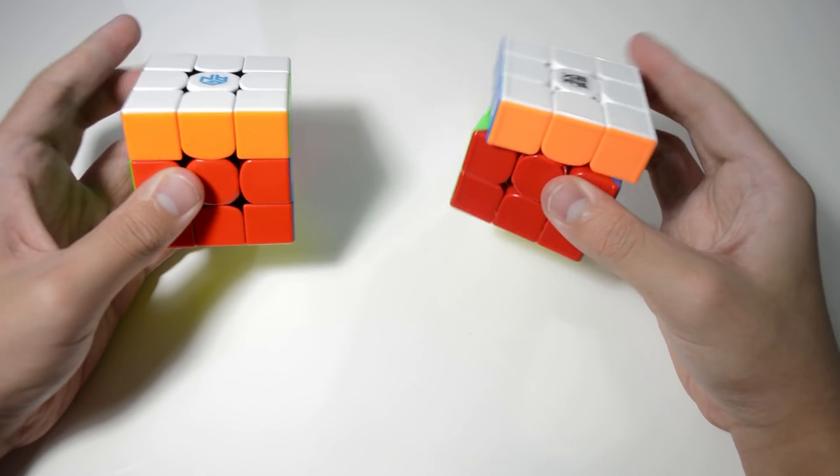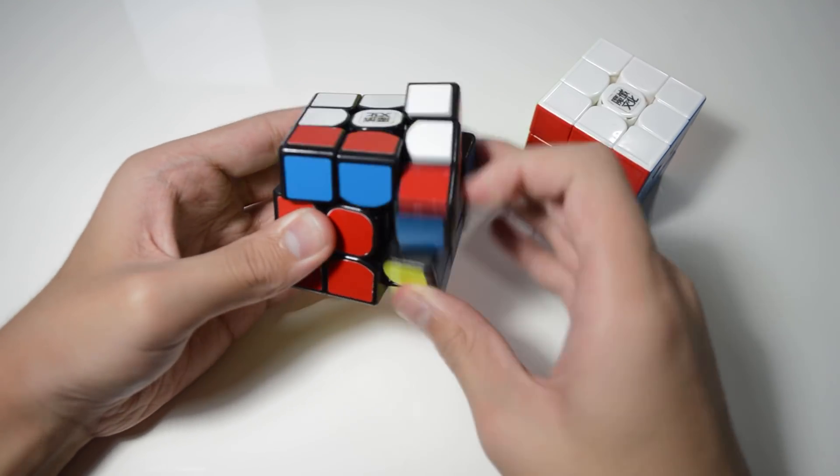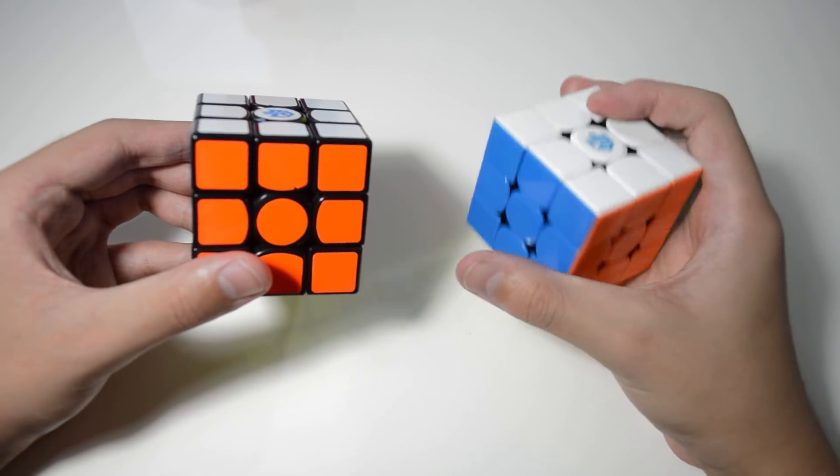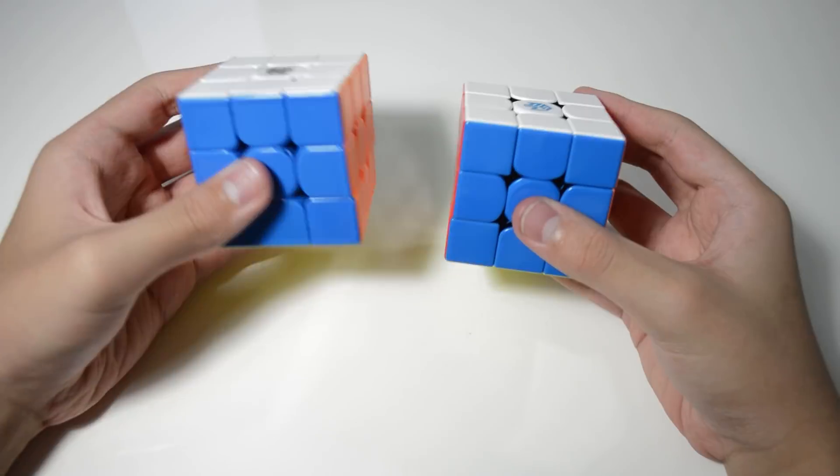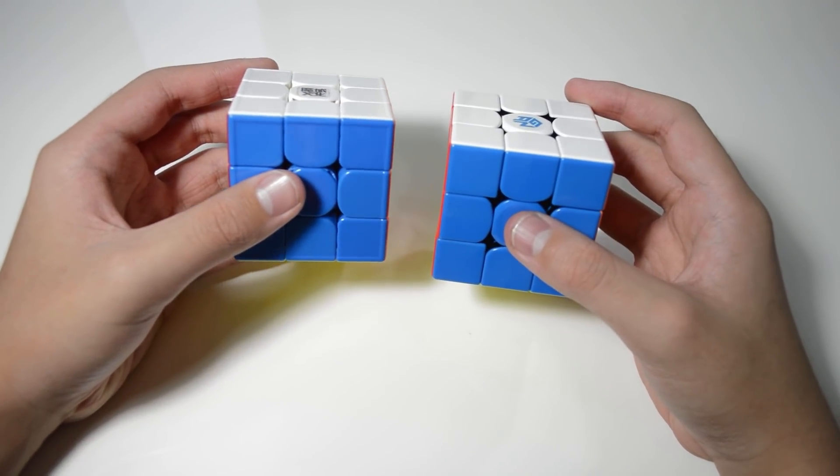The GTS-3M line began with the Weilong GTS, and the 356X evolved from the original Air. Both cubes are exceptional in their performance, and only have some subjective flaws.